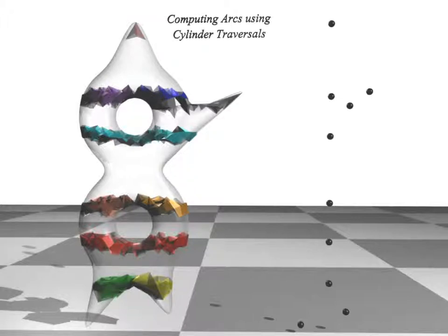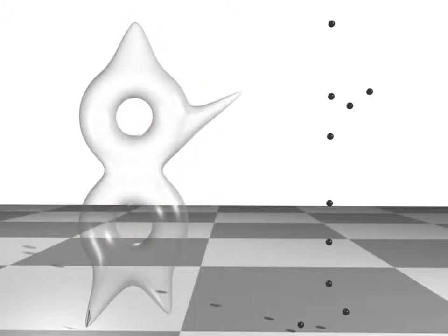The final step of the algorithm computes the arcs of the Reeb graph by tracing through each cylinder. Starting from a triangle incident on the upper link of the smallest critical point, we march to an adjacent triangle having vertices with a higher function value. We continue marching until we reach a triangle that contains the level set at an ISO value equal to the function value of the next non-minimum critical point. If the destination triangle belongs to a critical level set, we insert an arc between the corresponding nodes in the Reeb graph. We repeat this process for all critical points in the sorted list.